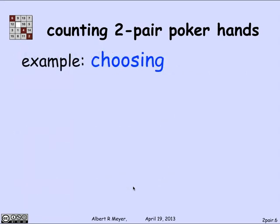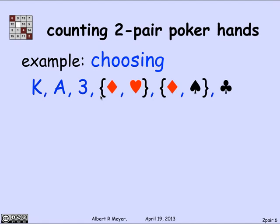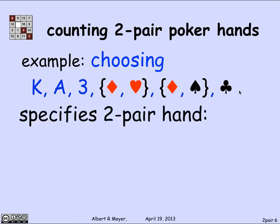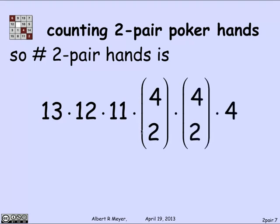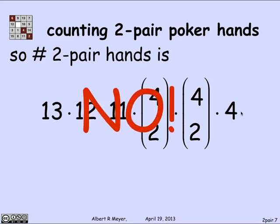For example, I might specify a two-pair hand by saying: choose a pair of kings to come first, a pair of aces as the second pair, and a three as the loose card. Then choose the set {diamonds, hearts} for the kings, {diamonds, spades} for the aces, and clubs for the three. This sequence of choices specifies exactly the two-pair hand illustrated previously — two kings (diamond and hearts), two aces (diamond and spade), and the three of clubs. So the total count is 13 × 12 × 11 × C(4,2) × C(4,2) × 4 — but that's not right; there's a bug.